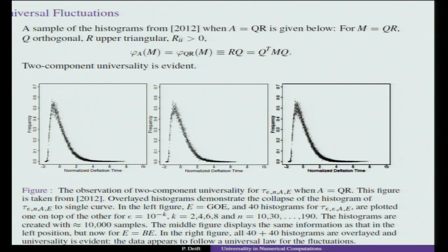These 40 histograms are all for the QR algorithm, all for matrices chosen from GOE (the Gaussian Orthogonal Ensemble), for different values of ε — specifically 10^{-2}, 10^{-4}, 10^{-6}, 10^{-8} — and N ranging from 10 to 190. That gives 20 values of N and 4 values of ε: 40 histograms, one on top of the other. Then you do exactly the same thing with Bernoulli matrices (entries ±1/√N) — 40 more histograms. You superimpose them and see the universality coming out, entering the scaling regime as ε gets smaller and N gets larger.